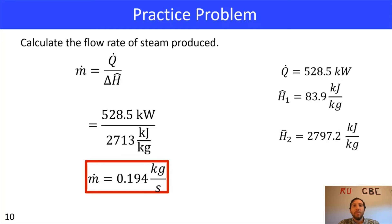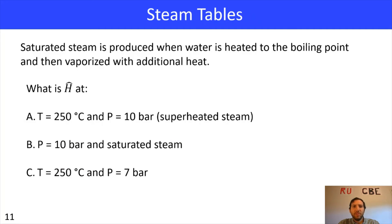Now that we've worked through this problem and started talking about steam tables, let's do a little more steam table practice for reading and extracting information. Saturated steam is produced when water is heated to the boiling point and then vaporized with additional heat — it's the bare minimum energy to get steam; if you remove any energy you'll get a water droplet. We're going to look at three cases: A) temperature of 250°C and P of 10 bar, which is superheated steam; B) pressure of 10 bar and saturated steam; and C) temperature of 250°C and P equal to 7 bar.